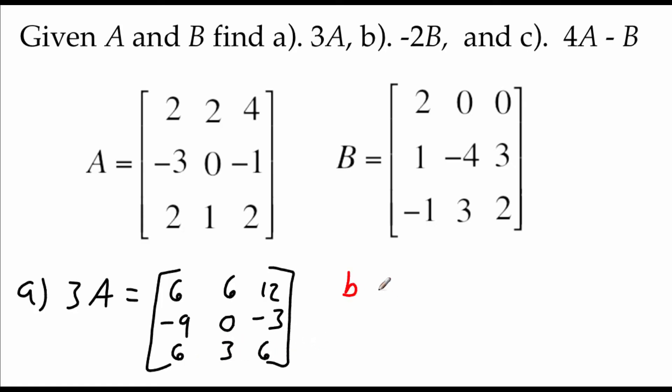In part B we're going to take negative 2 times our matrix B. So again it's just like distributive property. Multiply the negative 2 by everything inside of our matrix. So negative 2 times 2 is negative 4, and then we end up with 0, 0. Moving on to the second row we've got negative 2, 8, negative 6. And bottom row we get 2, negative 6, negative 4.